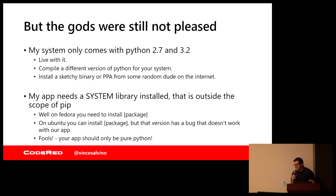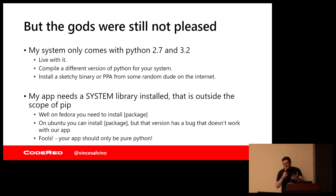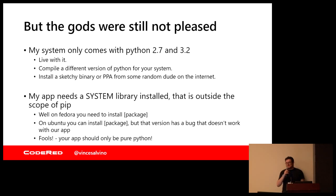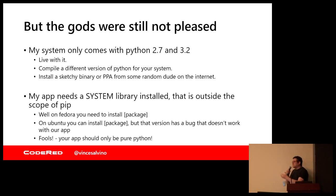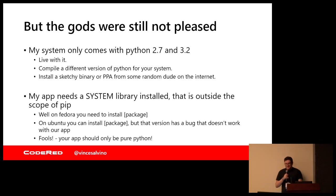Another issue is my app needs a system library installed. This is not something that pip can do. I can't pip install Apache. Classic example is MySQL client — to get MySQL client, you have to have all these system dependencies. Has anyone ever seen this on Stack Overflow? Well, on Fedora you need to install this. On Ubuntu you need to install this. But it doesn't work with this version, so you have to use a different version. Or my favorite: 'Your app should only be pure Python.'